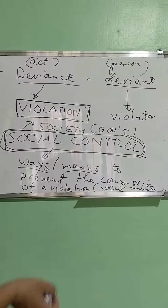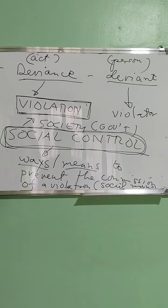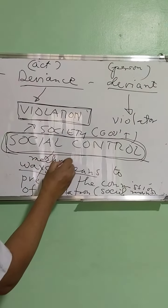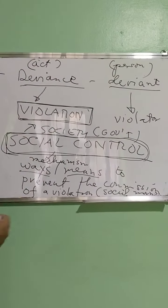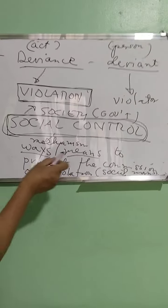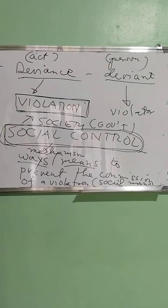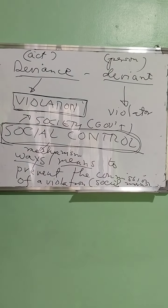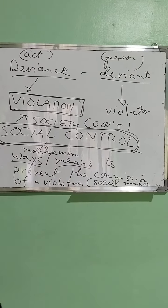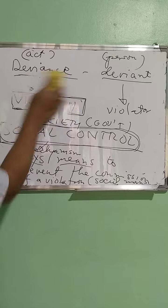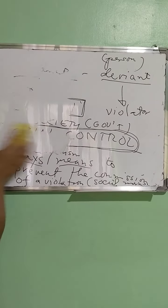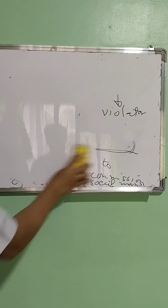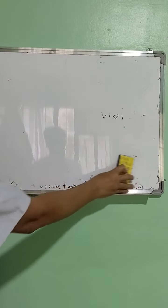When I talk about social control, I am talking about the ways or means by which we could prevent the commission of a violation of a social norm. In short, we call these the mechanisms — mechanisms imposed by society or by the government to prevent the commission of a violation of the social norm.